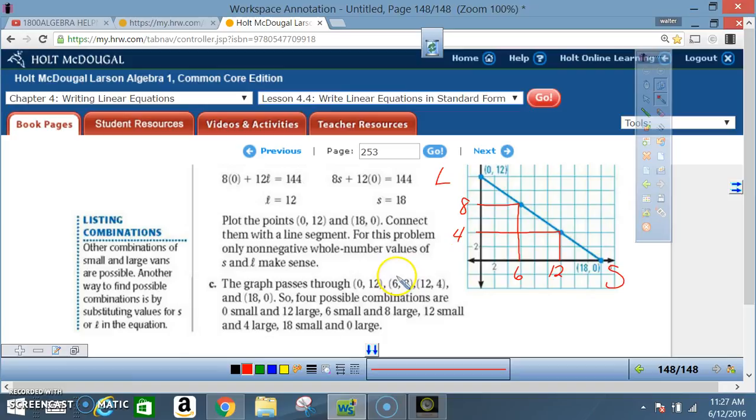So those would be our combinations. So the graph passes through 0, 12, 6, 8, 12, 4, and 18, 0.